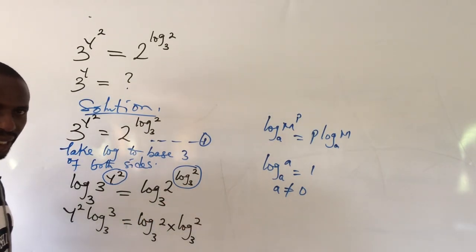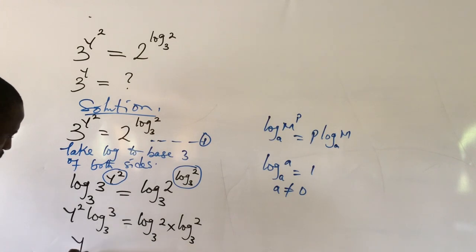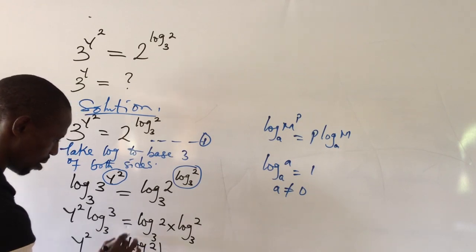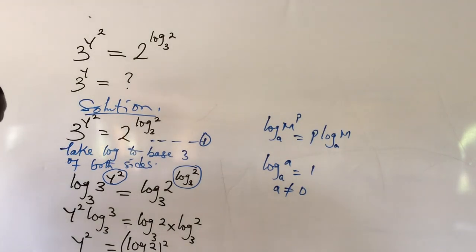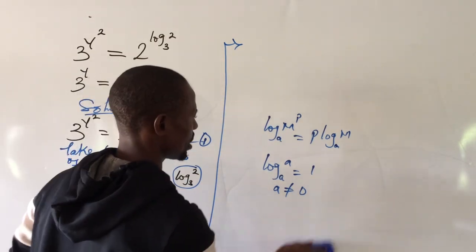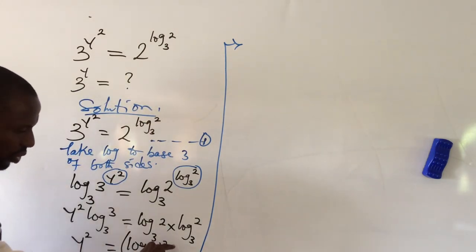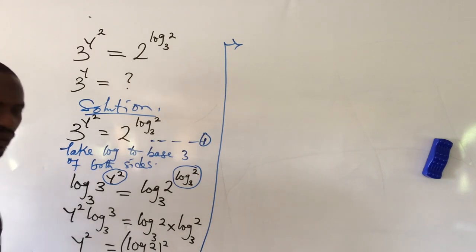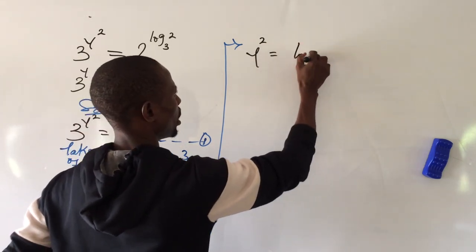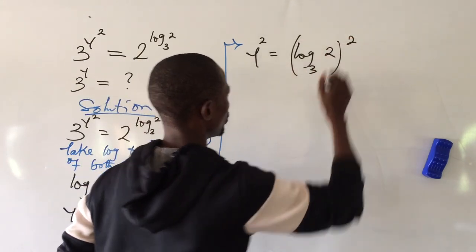So if we multiply this out, this expression is going to give us: y squared equals log 2 base 3, all to the power of 2. From here, we can take the square root on both sides. We have y to the power of 2, and on the right side (log 2 base 3) all to the power of 2.